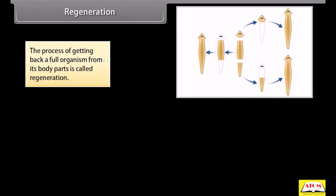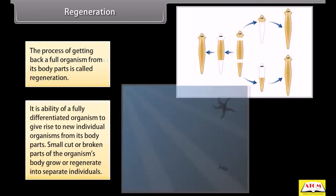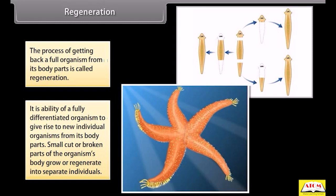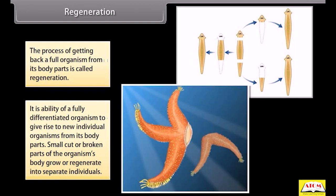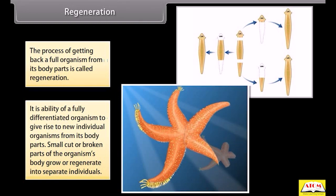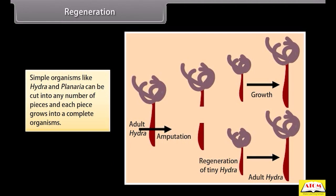The process of getting back a full organism from its body parts is called regeneration. It is the ability of a fully differentiated organism to give rise to new individual organisms from its body parts. Small cut or broken parts of the organism's body grow or regenerate into separate individuals. Simple organisms like hydra and planaria can be cut into any number of pieces, and each piece grows into a complete organism.